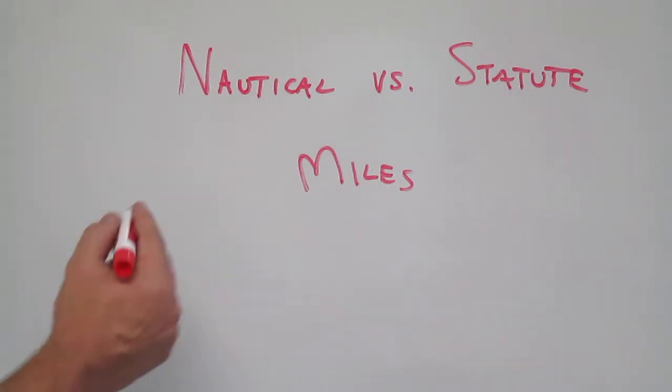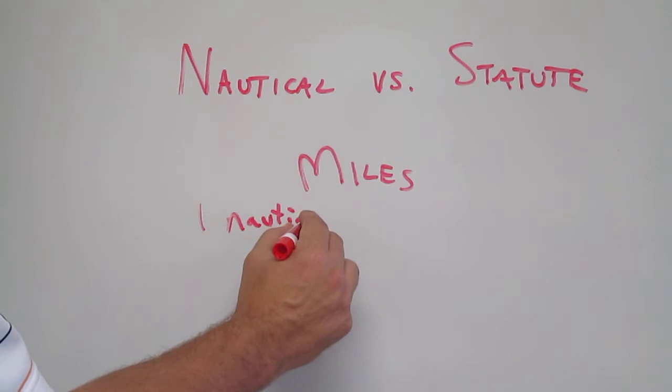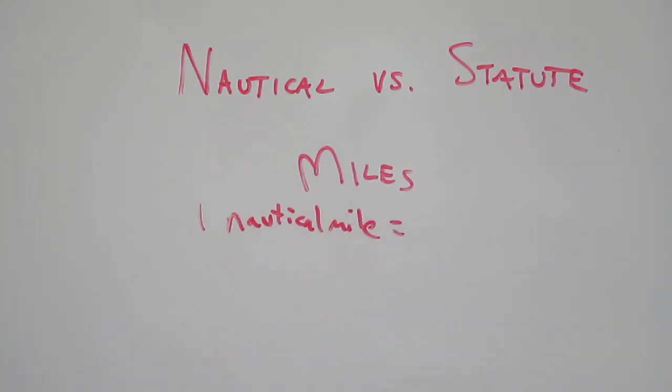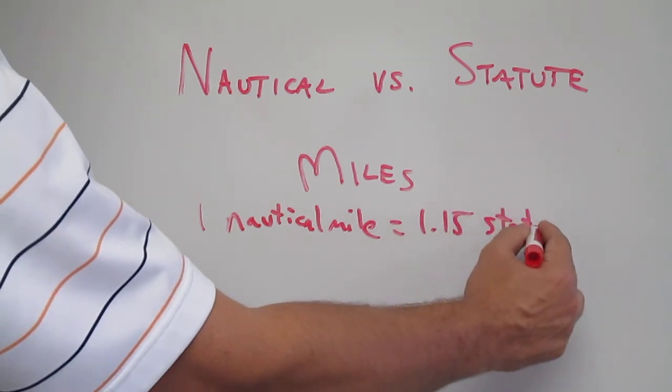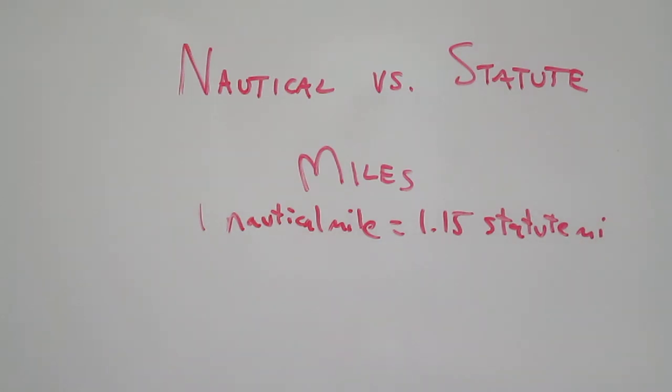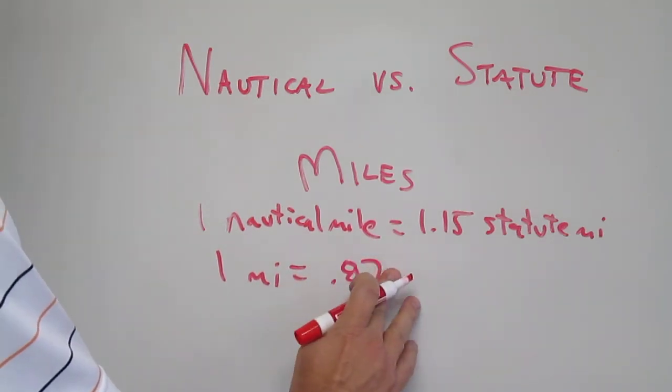The thing you need to know is that one nautical mile is equal to 1.15 statute miles. Or if you flip that around, one statute mile is approximately 0.87 nautical miles.